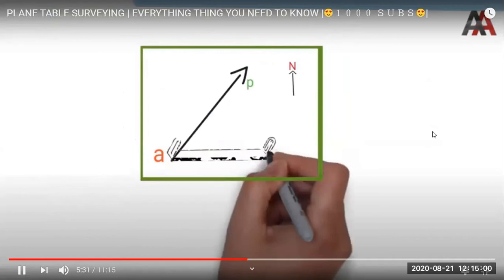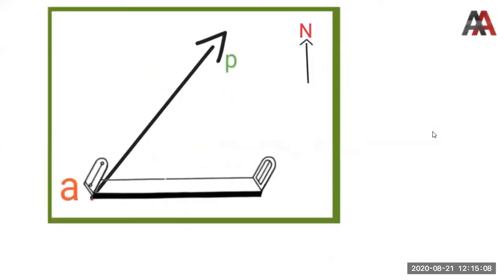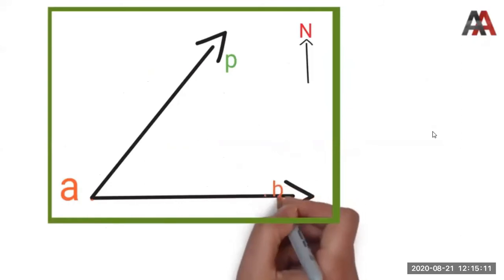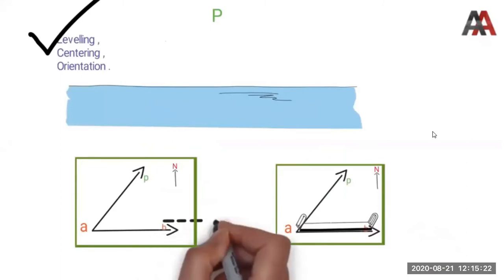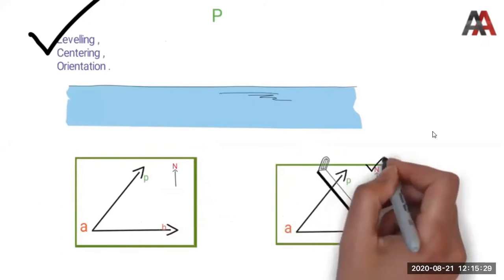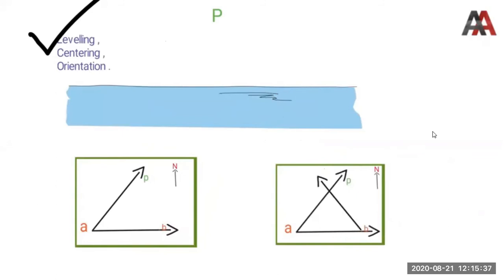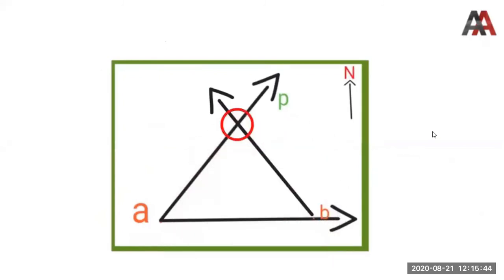We range from A to B and draw a ray from A to point P as well. Then we measure the distance AB at a suitable scale and mark line AB on paper. We shift the table to station B, level, center, and orient. We use the plotted line AB to orient at B, then sight the inaccessible point P from B and draw a ray. The intersection of the two rays from A and B gives us the plotted position of point P.